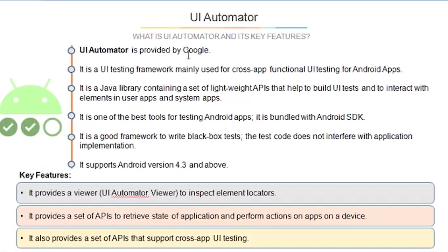UI Automator is provided by Google and used by Appium. It is a UI testing framework mainly used for cross-app functional UI testing for Android apps. It is a Java library containing lightweight APIs that help build UI tests and interact with elements in user apps and system apps. System apps are pre-installed apps on a new phone, while user apps are those you download explicitly.